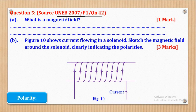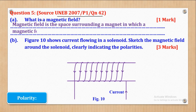Question 5 came from UNEB 2007 Paper 1, Question 42. Part A: what is a magnetic field? A magnetic field is a space surrounding a magnet in which a magnetic force is exerted. If you wrote that, that would be one mark.